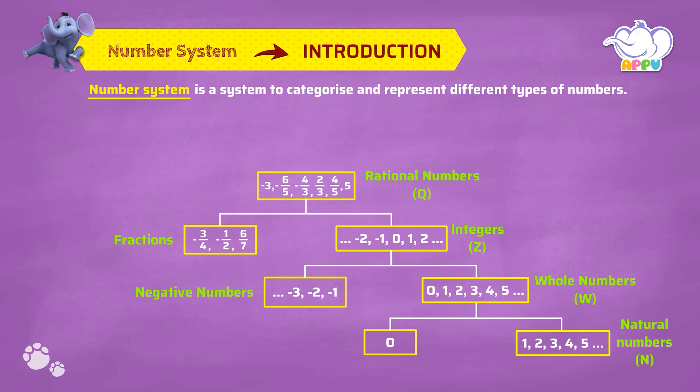Then we have irrational numbers denoted by capital P. For example, minus square root 5, minus square root 1 by 3, square root 2, square root 1 by 7, etc. Rational numbers and irrational numbers together form the real numbers which are denoted by capital R.